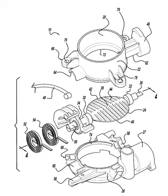The ECU then determines the throttle opening based on the accelerator pedal's position and inputs from other engine sensors such as the engine coolant temperature sensor. When the driver presses on the accelerator pedal, the throttle plate rotates within the throttle body, opening the throttle passage to allow more air into the intake manifold. A mass airflow sensor measures this change and communicates it to the ECU, which increases the amount of fuel injected to obtain the required air-fuel ratio. A throttle position sensor (TPS) is connected to the shaft of the throttle plate to provide information on whether the throttle is in idle, wide-open throttle (WOT), or somewhere in between.